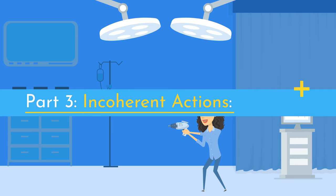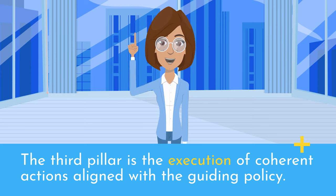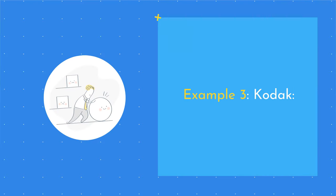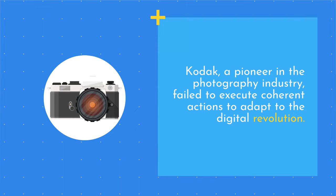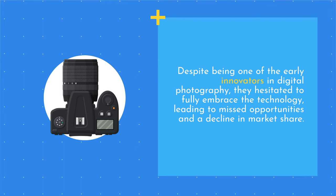Part 3: Incoherent Actions. The third pillar is the execution of coherent actions aligned with a guiding policy. A bad strategy often involves scattered and contradictory actions that fail to drive meaningful results. Example 3 — Kodak. Kodak, a pioneer in the photography industry, failed to execute coherent actions to adapt to the digital revolution. Despite being one of the early innovators in digital photography, they hesitated to fully embrace the technology, leading to missed opportunities and a decline in market share.